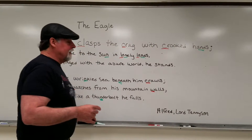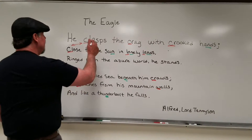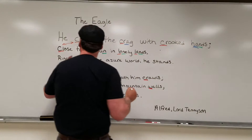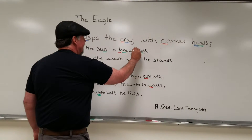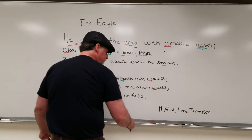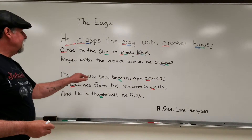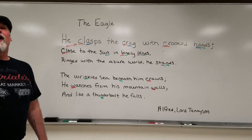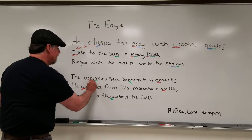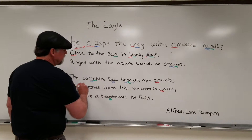Lastly is assonance. Assonance is, rather than a repetition of a consonant sound, a repetition of a vowel sound. In the first line we have the A in 'clasps,' in 'crags,' and the A in 'hands.' In 'Close to the sun and lonely,' we have that A sound again in 'lands.' 'Ringed with the azure world he stands.' By the way, the N in 'in' is also another example of consonance. 'A wrinkled sea beneath him crawls' — you can hear the repetition of the long E sound. Even though 'wrinkled' has an I, the sound is a long E. So that's an example of assonance — as is 'sea,' 'beneath,' 'he.' Plenty of assonance in that line.